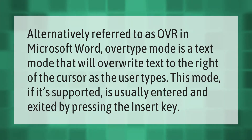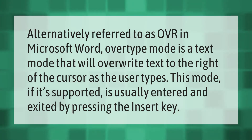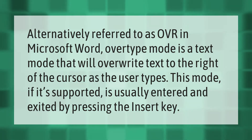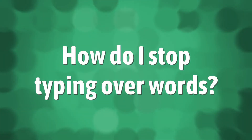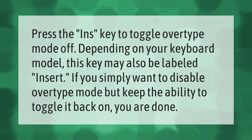Alternatively referred to as OVR in Microsoft Word, overtype mode is a text mode that will overwrite text to the right of the cursor as the user types. This mode, if supported, is usually entered and exited by pressing the Insert key.